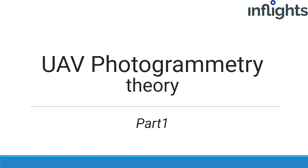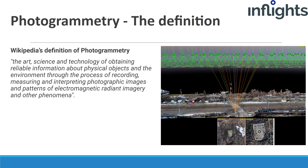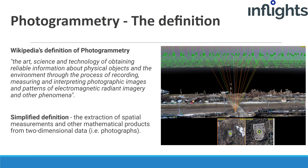So what is drone mapping? Drone mapping is a common name for photogrammetry with a drone. Wikipedia defines photogrammetry as the art, science and technology of obtaining reliable information about physical objects and the environment through recording, measuring and interpreting photographic images and patterns of electromagnetic radiant imagery. The simplified definition is the extraction of spatial measurements and other mathematical products from two-dimensional data, for example photographs.